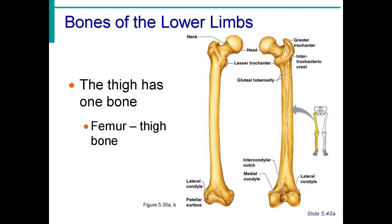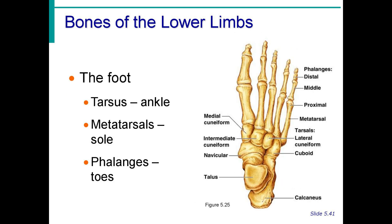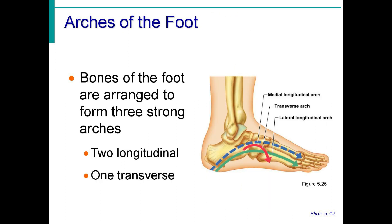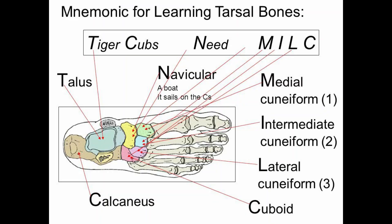In the lower limb, the femur is the thigh bone and the longest bone in the body. The lower leg has two bones: the tibia and the fibula. The tibia is the shin bone and is larger than the fibula. A mnemonic: tibia is 'taba' (fat/larger) and fibula is 'payat' (thin/smaller). The foot is divided into three: the tarsus or ankle, the metatarsals or sole, and the phalanges or toes. There are also mnemonics available for the tarsal bones.